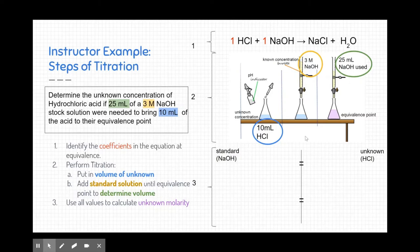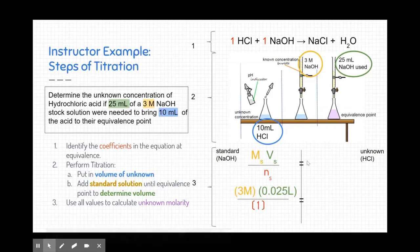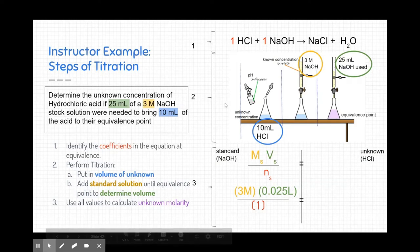On the left side of our equation we have our standard, where we know the concentration, we know the volume used, and we know how much of it is involved in this ratio. On the unknown side, we know the volume used and the coefficient in the equation, but we don't know the concentration. We're going to put that 3 molar sodium hydroxide in. We convert 25 milliliters into liters by moving the decimal left three times, giving us 0.025 liters. Then we put the coefficient from the equation in the denominator — so we multiply 3 by 0.025 and divide by 1. These coefficients aren't always going to be one to one, so we want to get in the habit of using them in this equation.